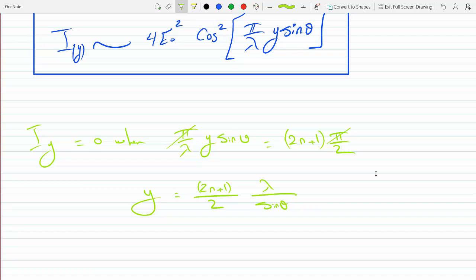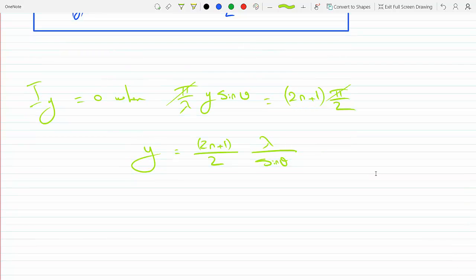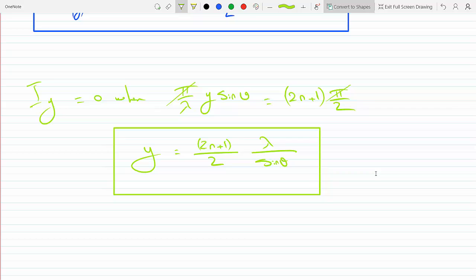And so as the angle increases, the sine of the angle increases, which means y will decrease and the separation will decrease. So this is y. And lastly for the analysis, as theta goes up, the sine theta goes up, and y goes down. So the separation decreases.